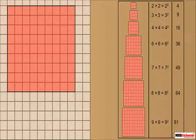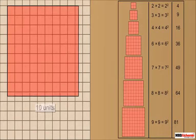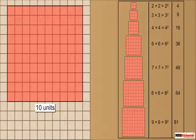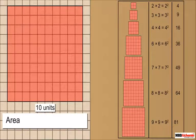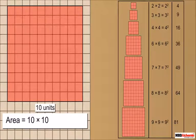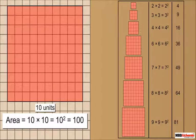Consider a square of side 10 units. It is further divided into 100 unit blocks. The area of this square is 10 into 10, which we write as 10 squared, which is equal to 100.